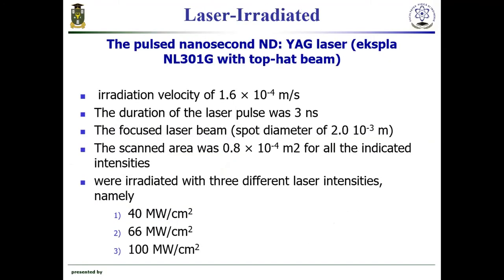After the deposition, the titanium dioxide zinc films were annealed at 420 degrees Celsius in an ammonia atmosphere and subsequently irradiated by a pulsed laser. The samples were irradiated with three different laser intensities: 40, 66, and 100 megawatts. The focused laser beam diameter was two millimeters, scanned normally over the sample surface at a constant speed of 1.6×10⁻⁴ meters per second, with a pulse duration of three nanoseconds.